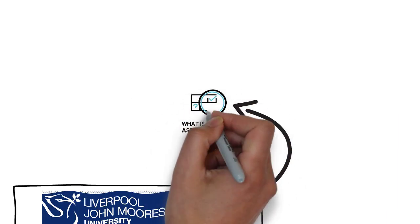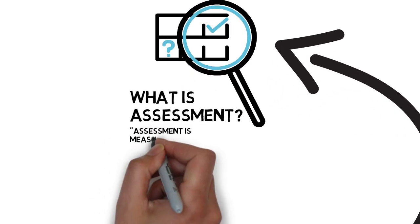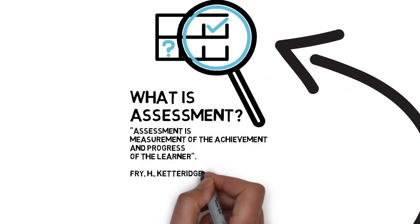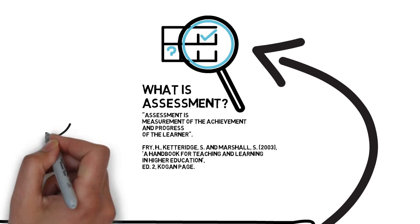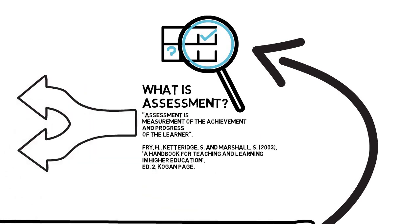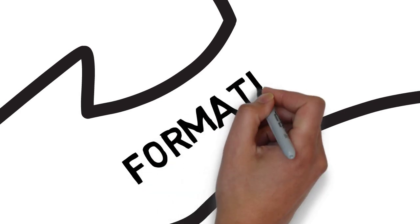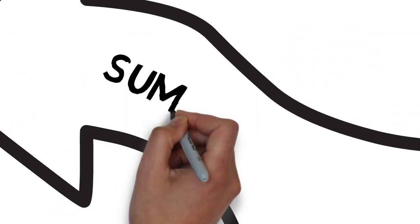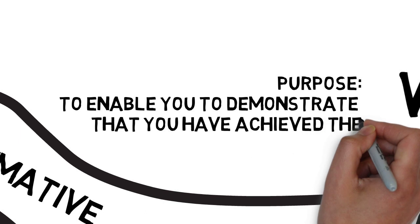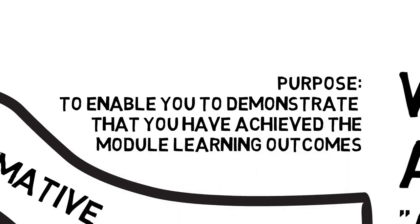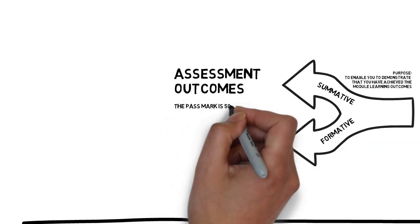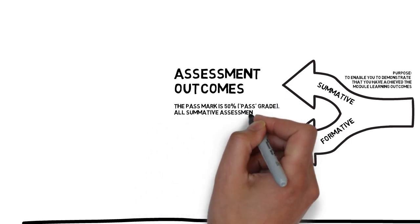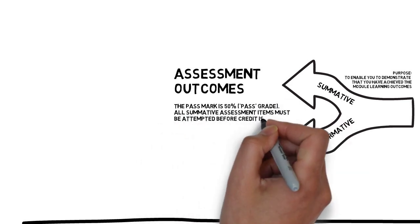Assessment can take many different forms — it might be a group presentation, it might be a reflective essay, or a number of different things, and there will be different expectations associated with each. Depending on what stage of your degree you are at, assessment can be formative, which doesn't count to your overall credits and grade but can be used to shape your learning, or it may be summative, which is used to calculate your grade at the end of your degree. The important thing is it's a means for you to demonstrate you've attained the module learning outcomes.